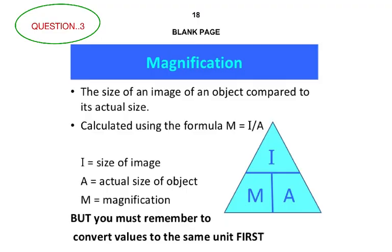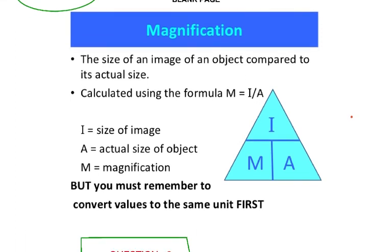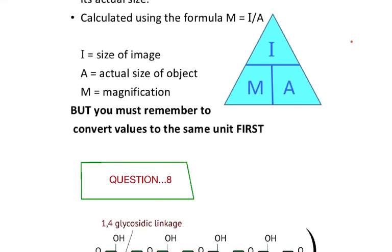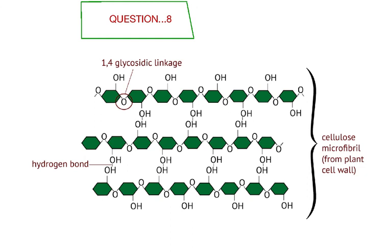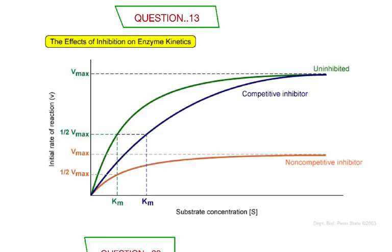To summarise the diagrams: for question three, review the magnification triangle; for question eight, study the cellulose molecule diagram carefully; for question thirteen, examine the graph showing how Vmax and half-Vmax change under competitive and non-competitive inhibition in three colours. Please also watch the second video to complete this paper. Thank you very much and best of luck for your exams.